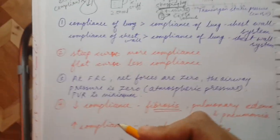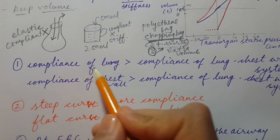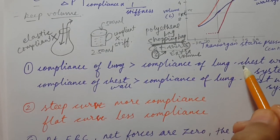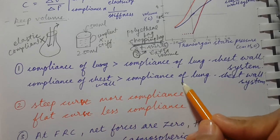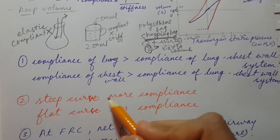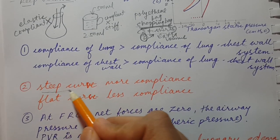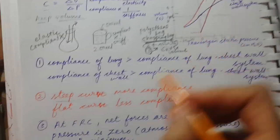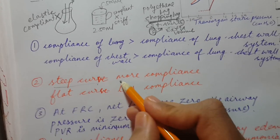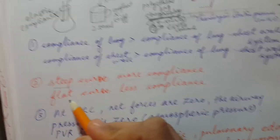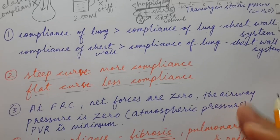The first key point is that compliance of the lung alone is more than compliance of the combined lung-and-chest-wall system. The second key point concerns the curves: if the curve is steep — meaning there is a sudden increase — then the thing is more compliant. If the curve is flat, then it is less compliant.